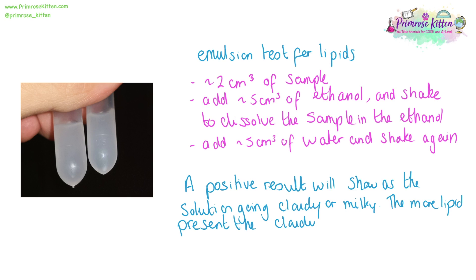It going cloudy is a qualitative test — you can say yes or no. In the exam you might be asked about improvements to this, and you could use a colourimeter to turn it into a quantitative test.